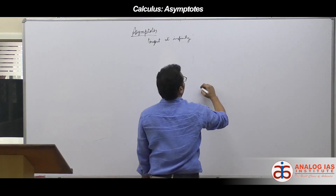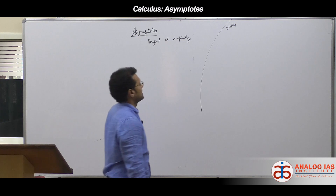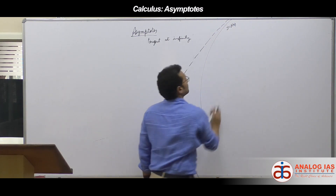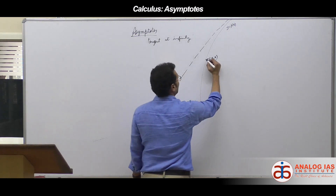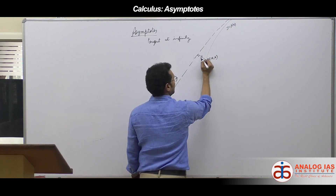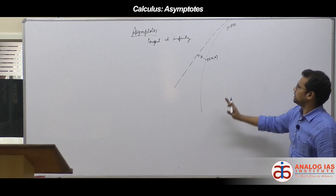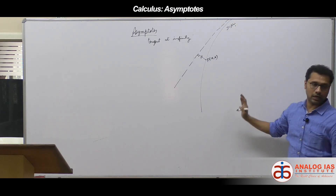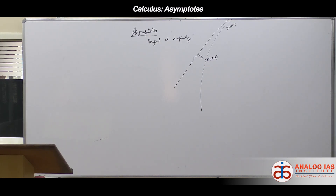Suppose I have a curve y = f(x) which goes to infinity. Assume there is a straight line, and from a point P(x, y) on the curve I drop a perpendicular onto that line. If the length of that perpendicular tends to 0 as x tends to infinity and y tends to infinity, it means the straight line touches the curve y = f(x) at infinity. We call such tangents at infinity as asymptotes.